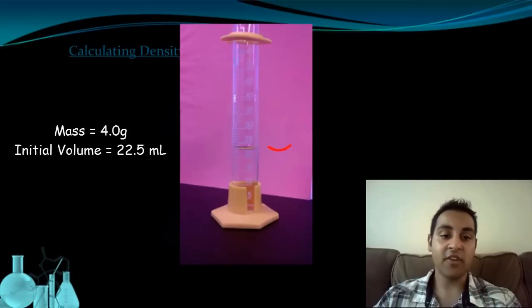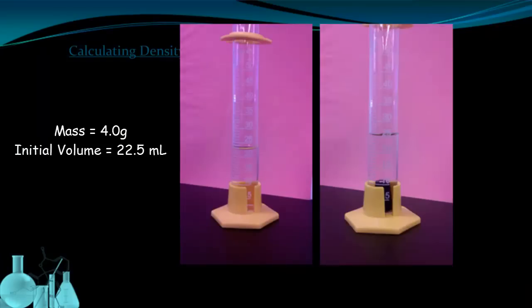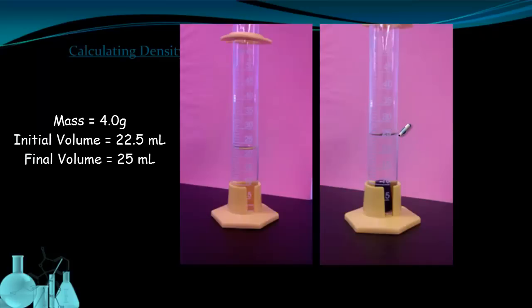Now I'm going to drop the object into the graduated cylinder and see how much the water changes. Here we go. I've dropped in my object. You can clearly see the water levels come up, and it looks like it's about 25 milliliters. So if my initial volume is 22.5 milliliters and my final volume is 25 milliliters, all I have to do to figure out what the object is is take the difference between the two numbers. So by examining the difference between where the water level started and where it ended up after I added the rubber stopper, I can figure out that the final volume of the rubber stopper is 2.5 milliliters.